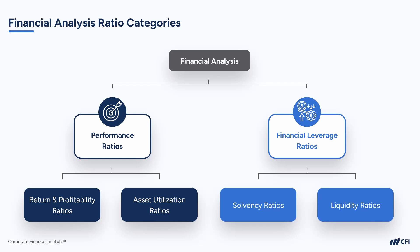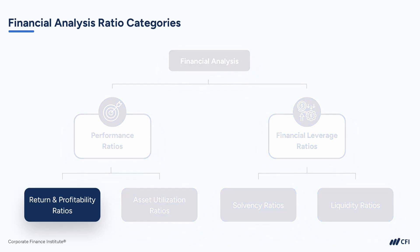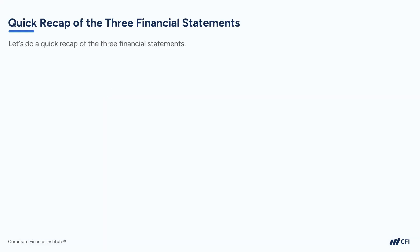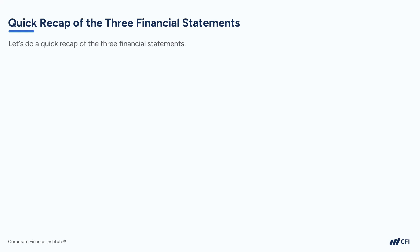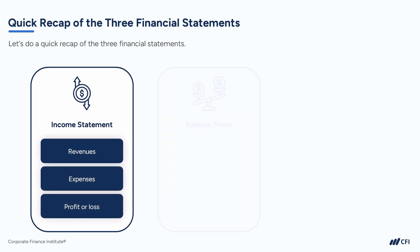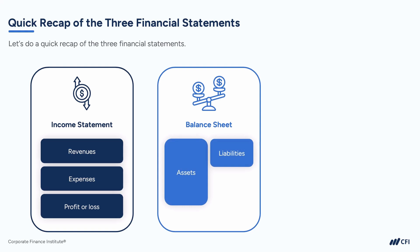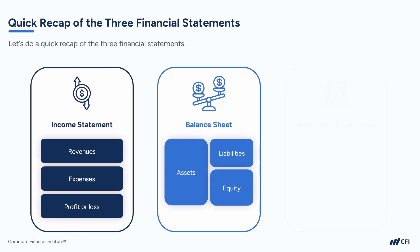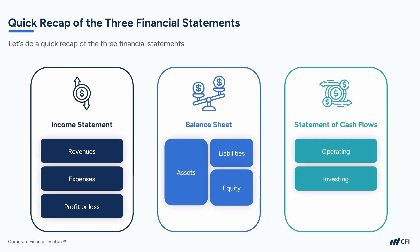We are going to start our financial analysis journey by focusing on return and profitability ratios. Before diving in, let's do a quick recap of the three financial statements. First is the income statement, also referred to as the statement of profit and loss, or P&L, which shows what a business has earned as revenues, what it's paid out in expenses, and the resultant profit or loss for a given period. The balance sheet shows what a business owns (assets), what it owes (liabilities), and what it's worth (equity) at a particular point in time. The statement of cash flows shows how a business has generated or used cash for operating, investing, or financing activities.